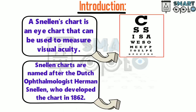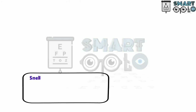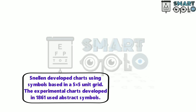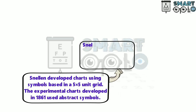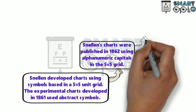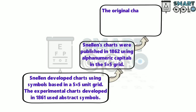Snellen developed a chart using symbols based in a 5x5 unit grid. The experimental chart developed in 1861 used abstract symbols. Snellen's chart published in 1862 used alphanumeric capitals in a 5x5 grid. The original chart shows these alphanumeric capitals.